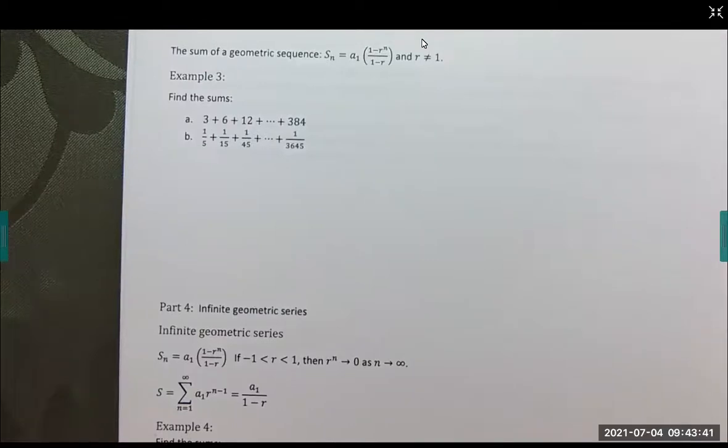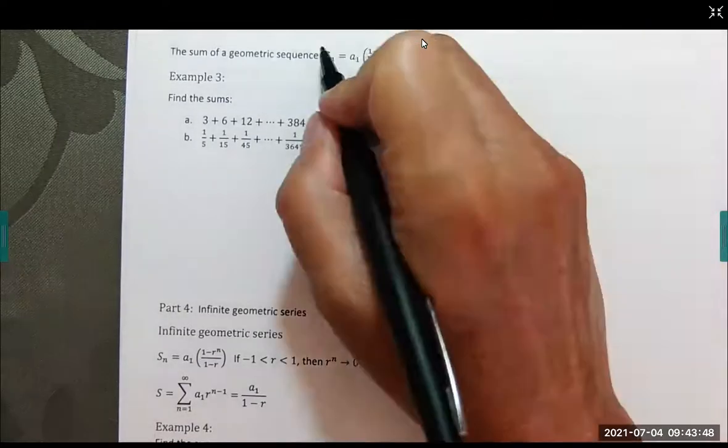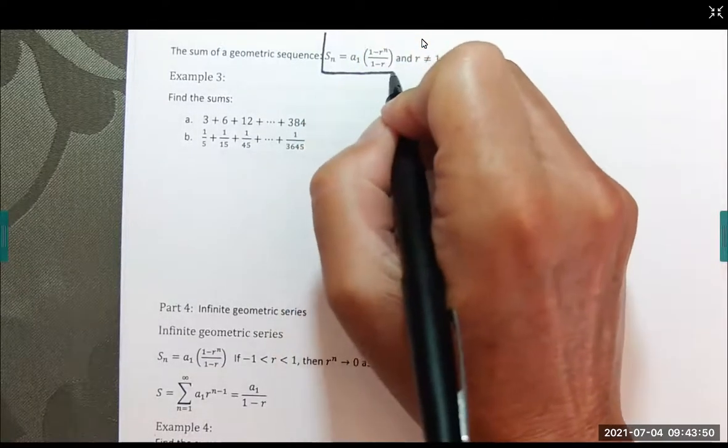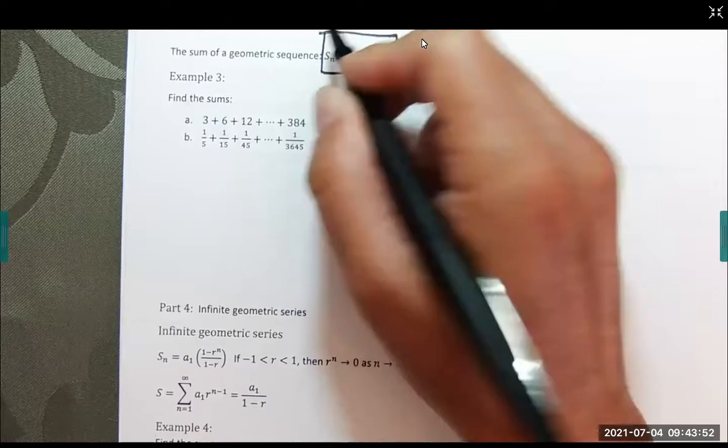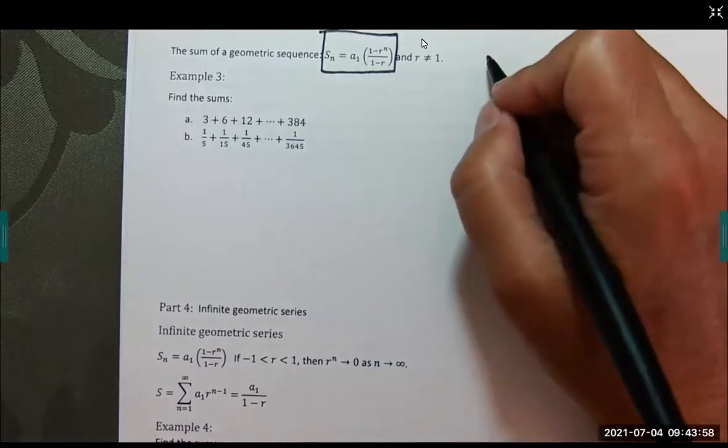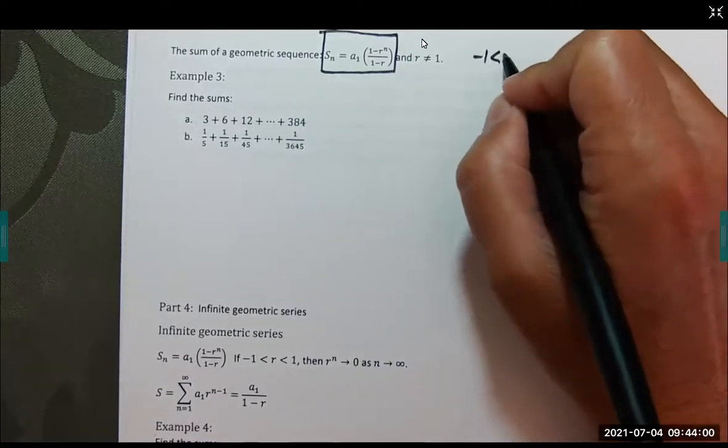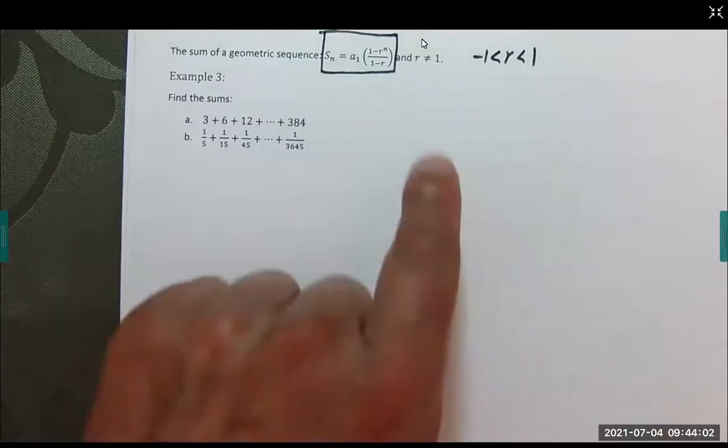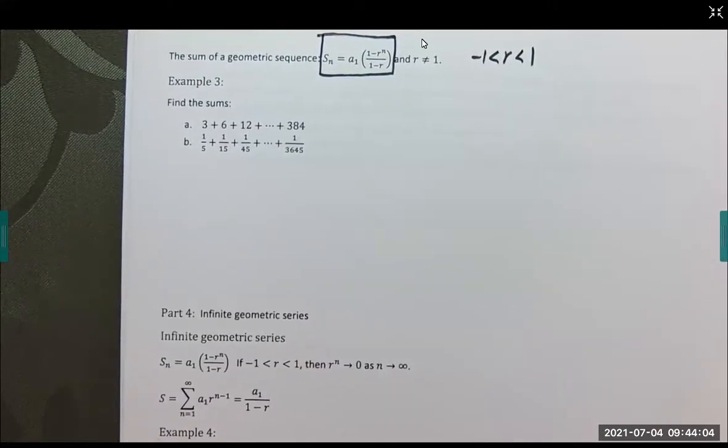Here we have the sum of a series. This is a big formula here. It's important. What's important to know is that R has to be between negative 1 and 1, and it can't equal 1.